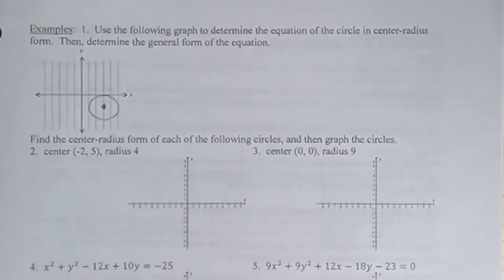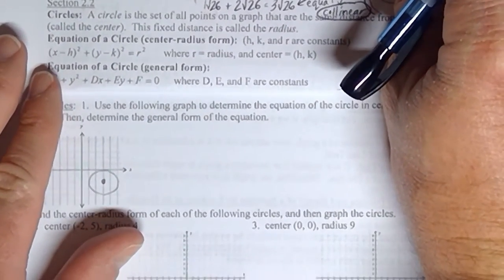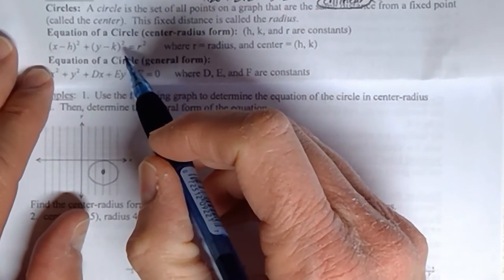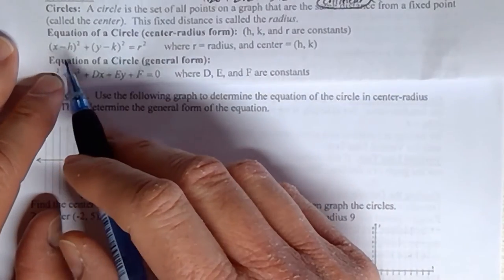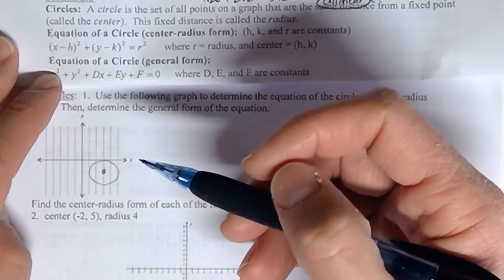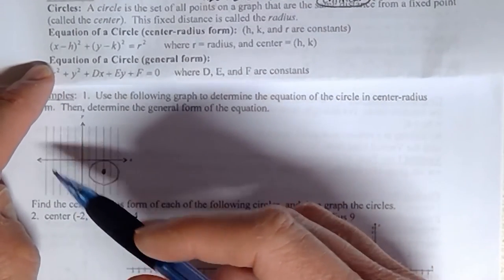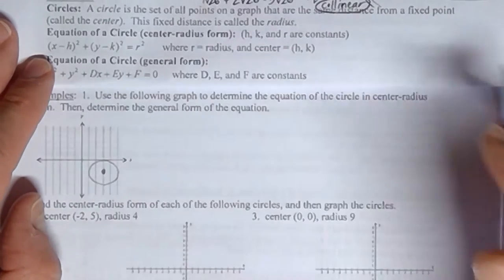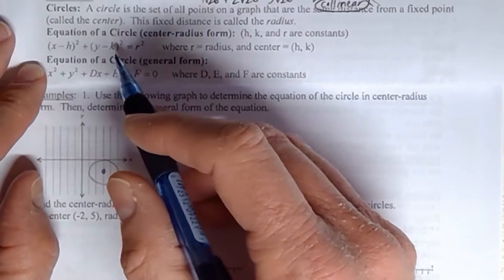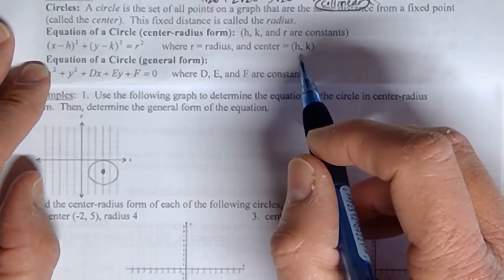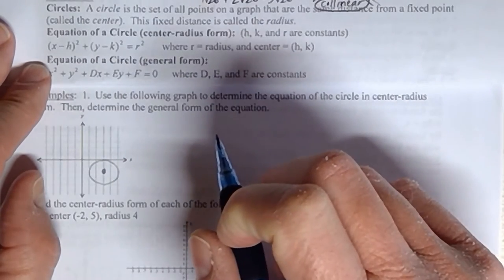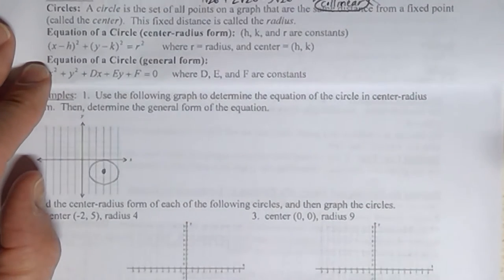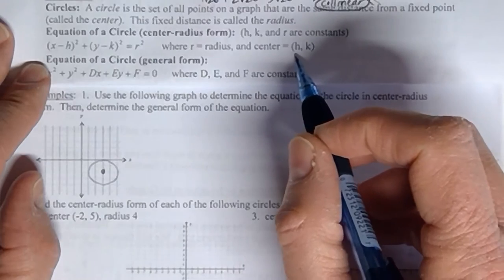When they say center-radius form they're talking about that formula with the two brackets. I'll go ahead and show you that formula right on the screen so we can follow it more easily. This is the formula we want to achieve for number one. Notice that the formula has five different letters in it. The x and y are the variables. The other three letters — h, k, and r — we have to figure out what those are equal to and replace them with numbers.